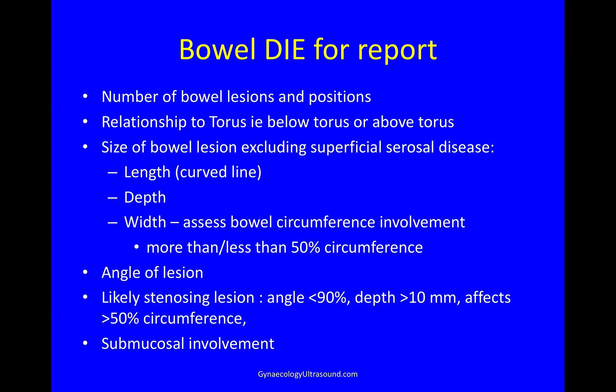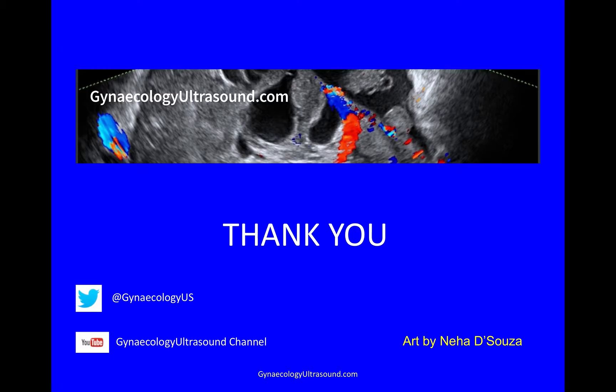When I report on a bowel nodule, I'll say the number of bowel lesions and where they are, what the relationship of the nodule is to the torus — is it below or above — what is the size of the lesion excluding any superficial disease, giving the length, depth and width, the angle of the lesion, whether it's likely to be stenosing or not, and if there's submucosal involvement. And that's it. Thank you very much.